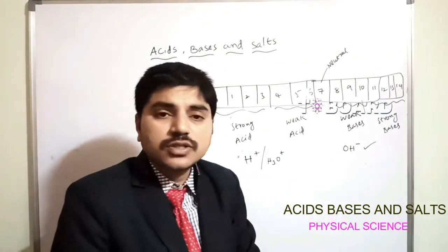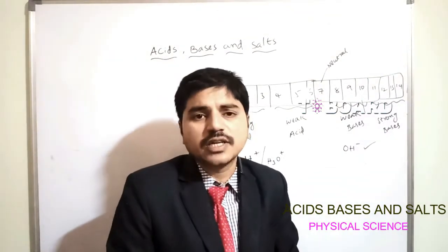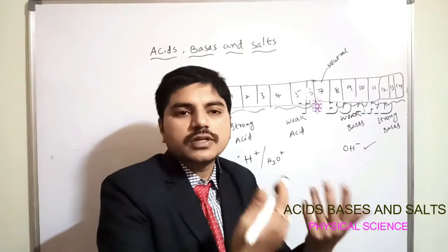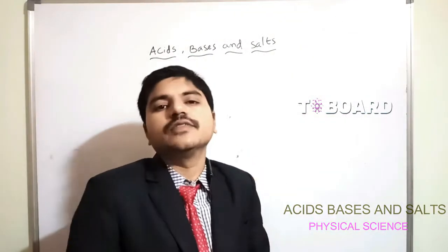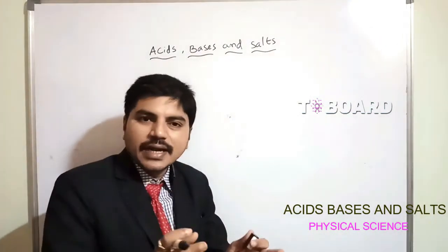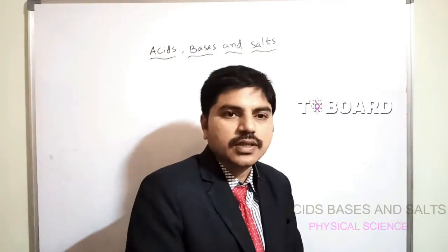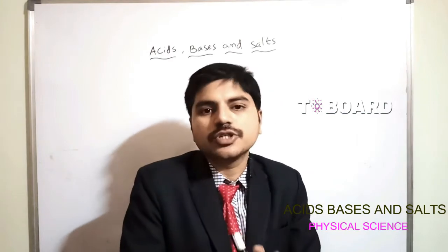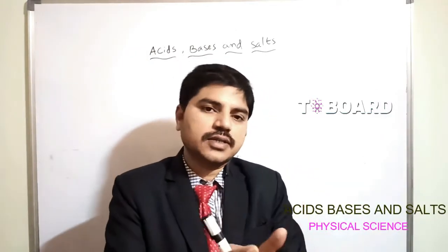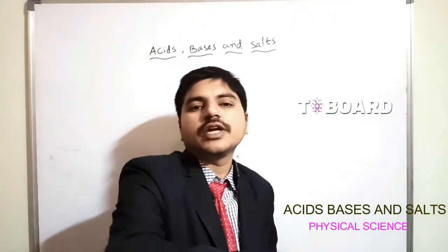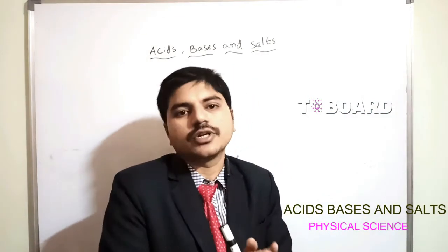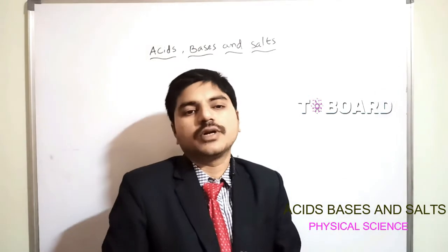The pH scale is important in daily life. Plants and animals depend on pH. If rain has a pH below 5.6, it is called acid rain. Acid rain contains more H⁺ ions. If this rainwater flows into rivers, aquatic animals find it difficult to survive.